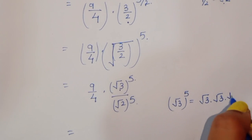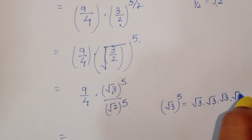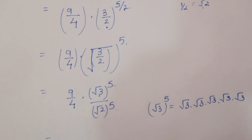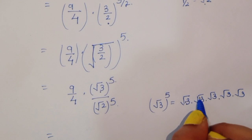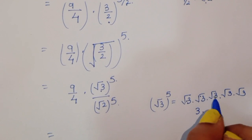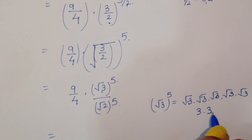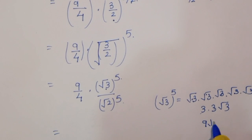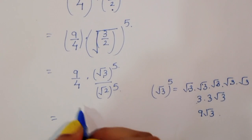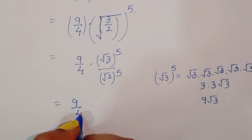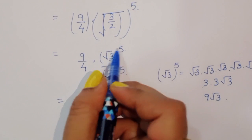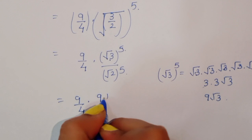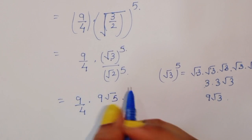Square root of 3 power 5 means we have square root of 3 multiplied 5 times: √3 · √3 · √3 · √3 · √3. Pairing them: √3 · √3 = 3, and again √3 · √3 = 3, leaving one √3. So 3 times 3 is 9, giving us 9√3.